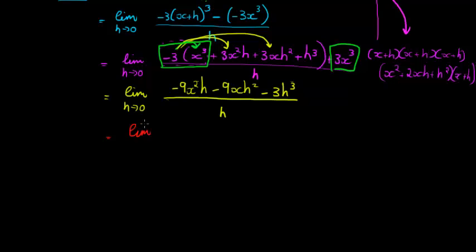So let's do that. If I take out h as a common factor, I get h times negative 9x squared minus 9xh minus 3h squared. So you see if I multiply this h back, I'll get the same thing that I had up there, divided by h.